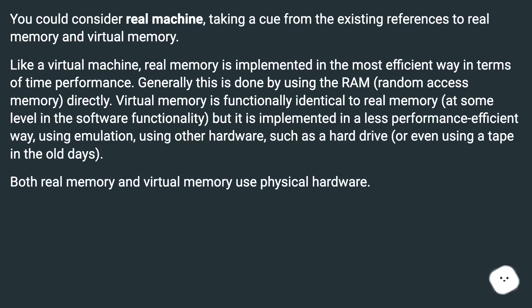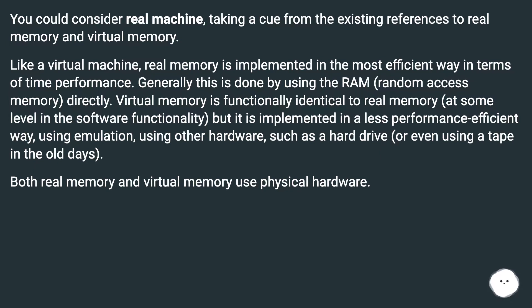You could consider 'real machine,' taking a cue from the existing references to real memory and virtual memory. Like a virtual machine, real memory is implemented in the most efficient way in terms of time performance — generally by using RAM directly. Virtual memory is functionally identical at the software level but is implemented less efficiently using emulation, other hardware such as a hard drive, or even tape in the old days. Both real memory and virtual memory use physical hardware.